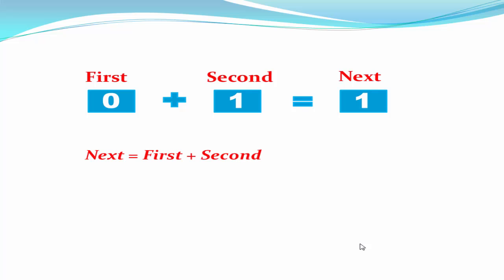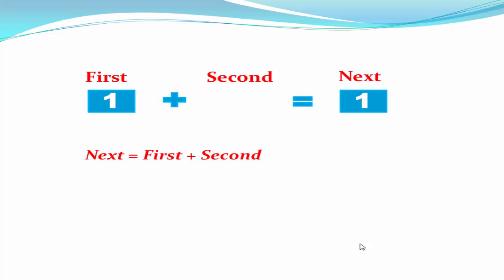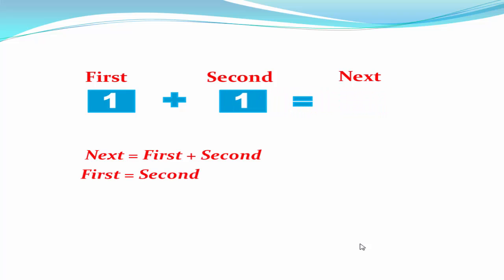Next, we need to shift the second number to the left. The first variable now holds the second number's value, so we write first equal to second. Then we shift next to the left, writing second equal to next.